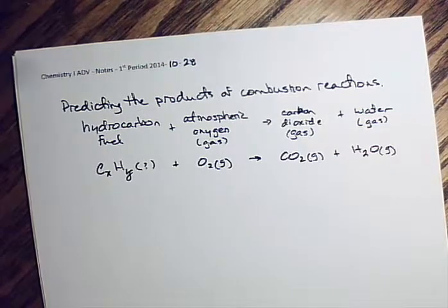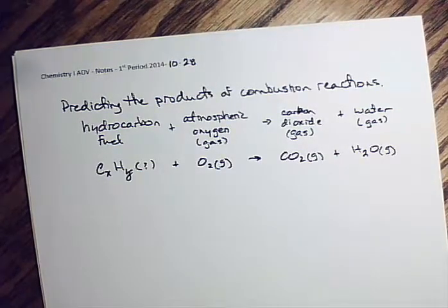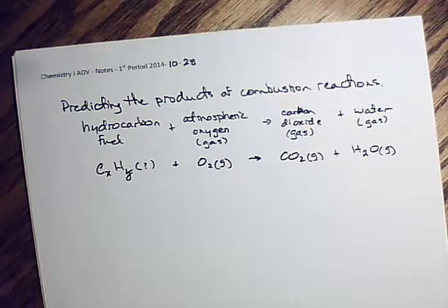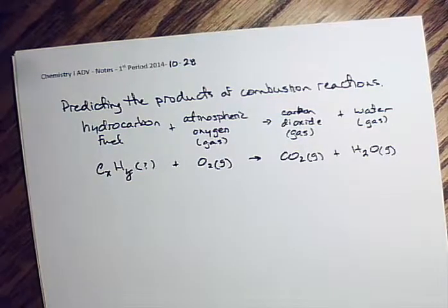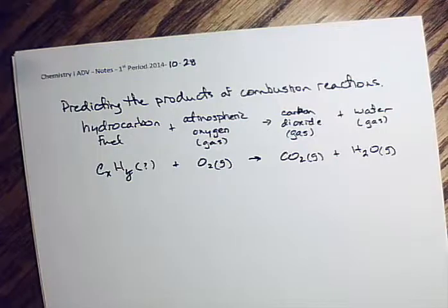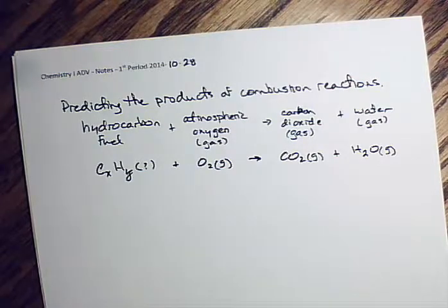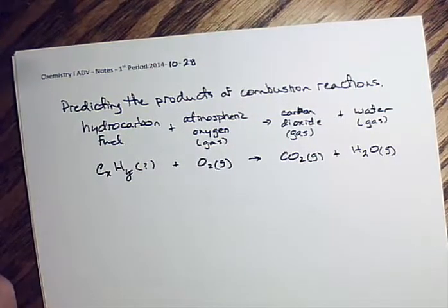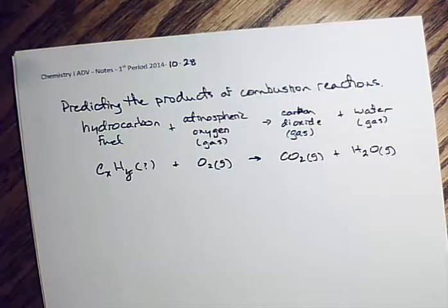When you crank up your car on a cold morning, the hydrocarbon fuel you're combusting is gasoline — mostly octane. That's where you get the octane rating. When you go to the gas station and see 95, 97, or 99, those are octane ratings. Gasoline was once mostly octane, though today the composition has changed. E85 means 85% gasoline and 15% ethanol.